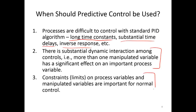Also, if you have constraints on the limits — either for manipulated variables, like a valve that can only go between zero and one hundred percent open, or a pump flow rate — or also for controlled variables, you may have upper and lower limits and want that variable to stay within those limits instead of necessarily driving to a target.